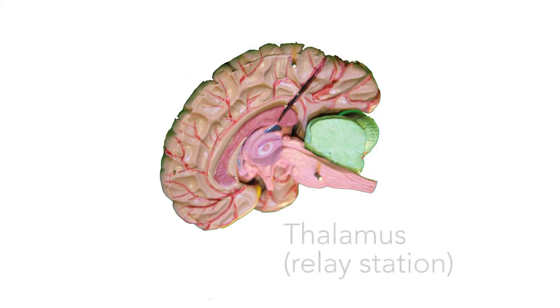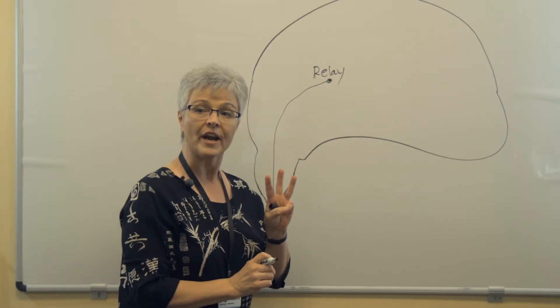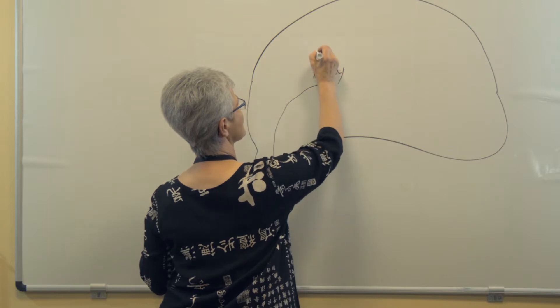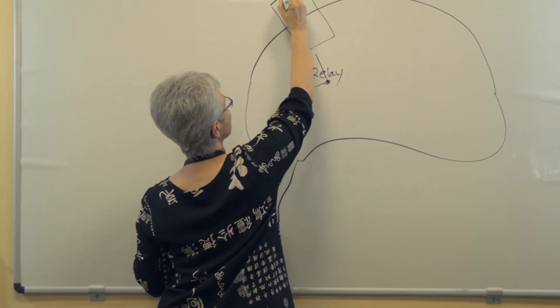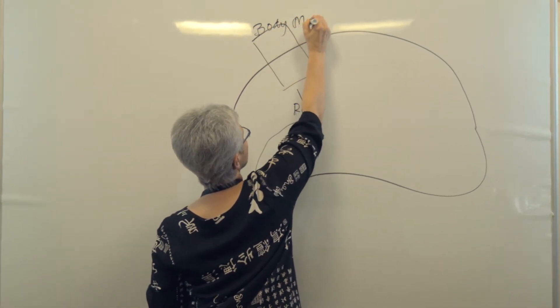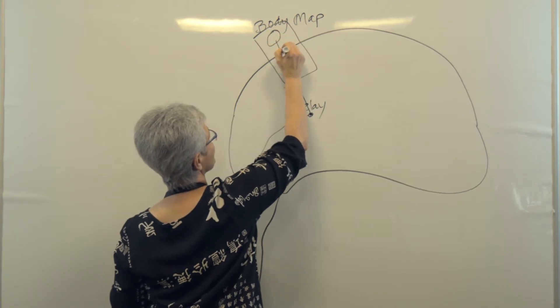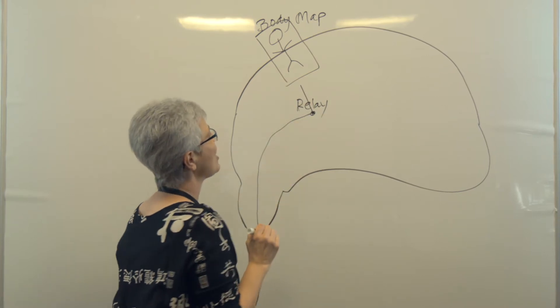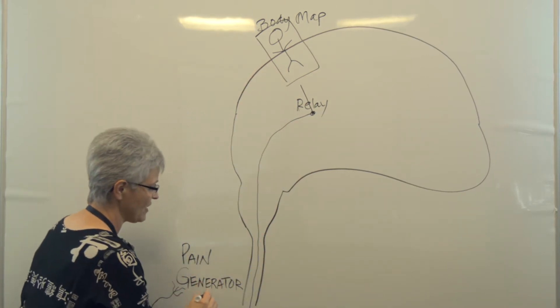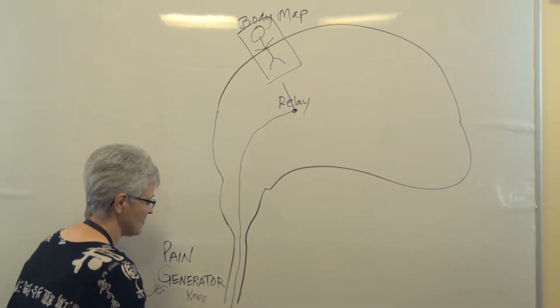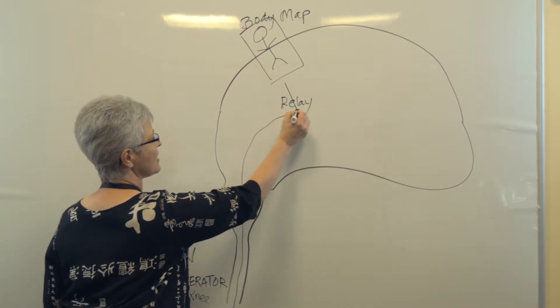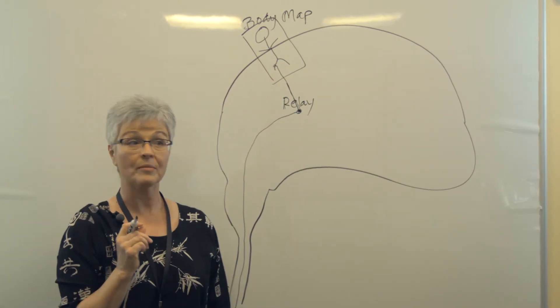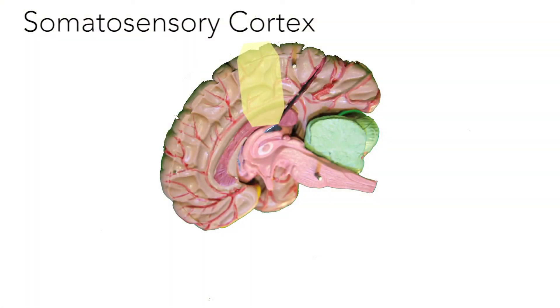So the relay station, for those that want the technical terms, this is called the thalamus. The relay station provides a communication hub and it will send a signal to three separate areas in the brain. The first area it sends a signal to is the body map. And in your brain, there's actually a little representation of your whole body embedded in your brain. And let's say the pain generator is your knee. The signal comes up to the relay station and goes right to the knee part of that body map. The official name for this is the somatosensory cortex and that's on your slide there.